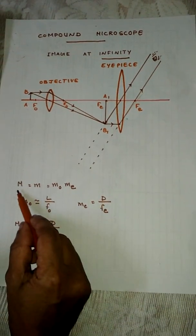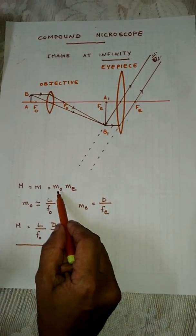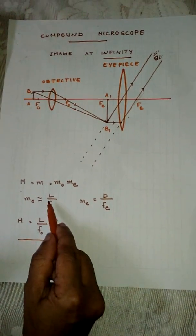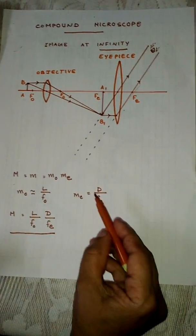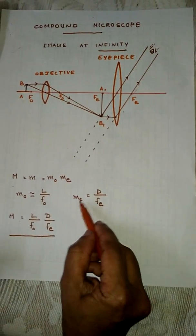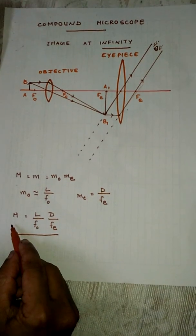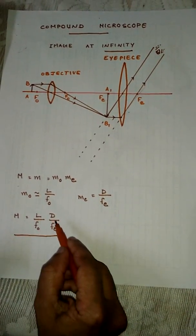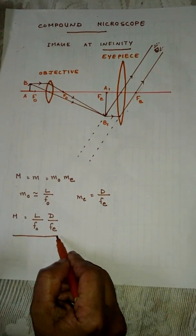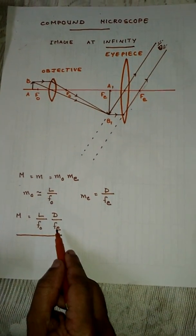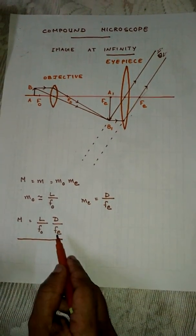In this case, the magnifying power is the product of magnifications MO times ME. As in the previous case, MO equals L by FO. But in the case of the eyepiece, ME equals D by FE. Therefore, M equals L by FO times D by FE. So magnifying power is inversely proportional to the focal length of the objective and eyepiece.